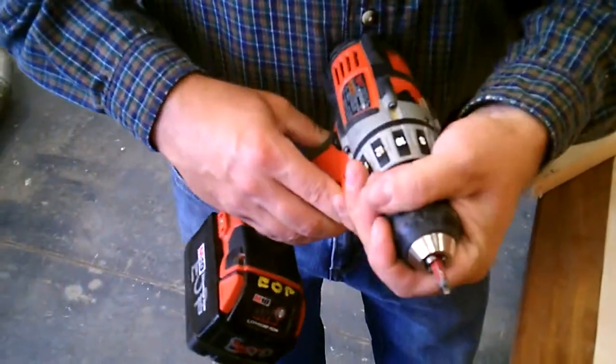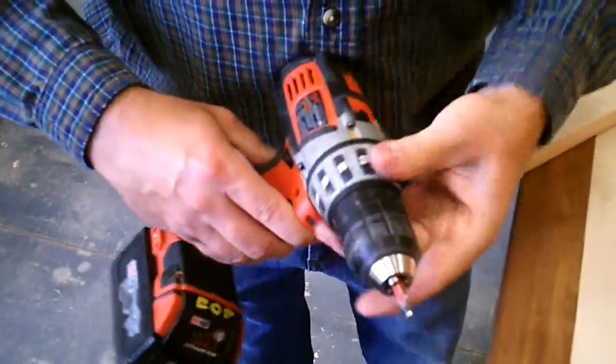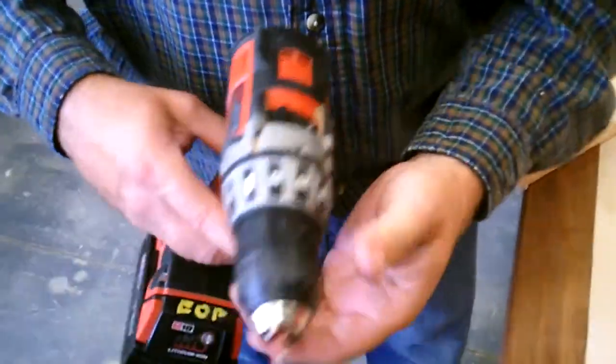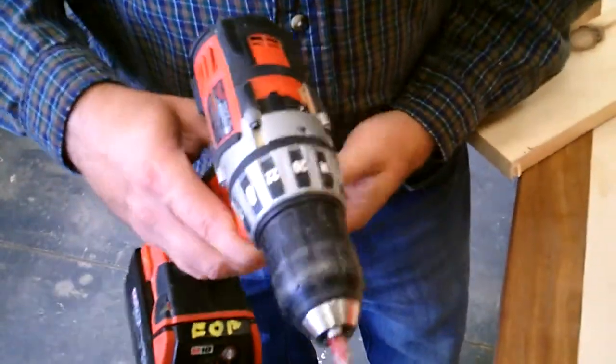I'm going to show you the torque setting. If it was on 6, see how it spins? I'm hardly putting pressure on it. If I wanted more torque to tighten it tighter, I'd turn it to 20, and it's harder. Now it's harder to tighten it.